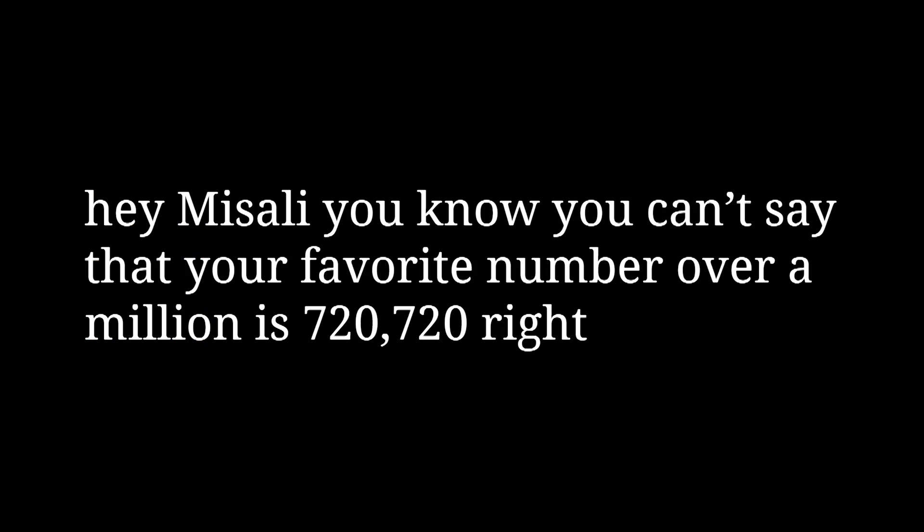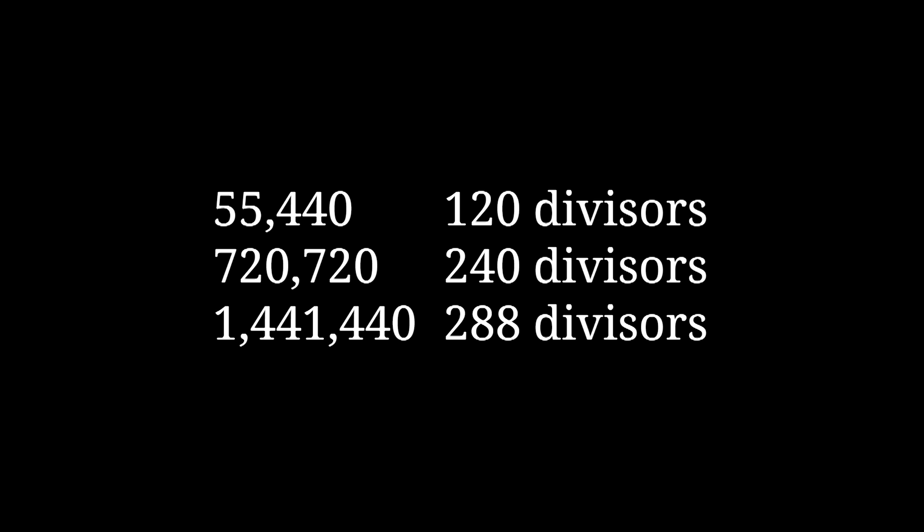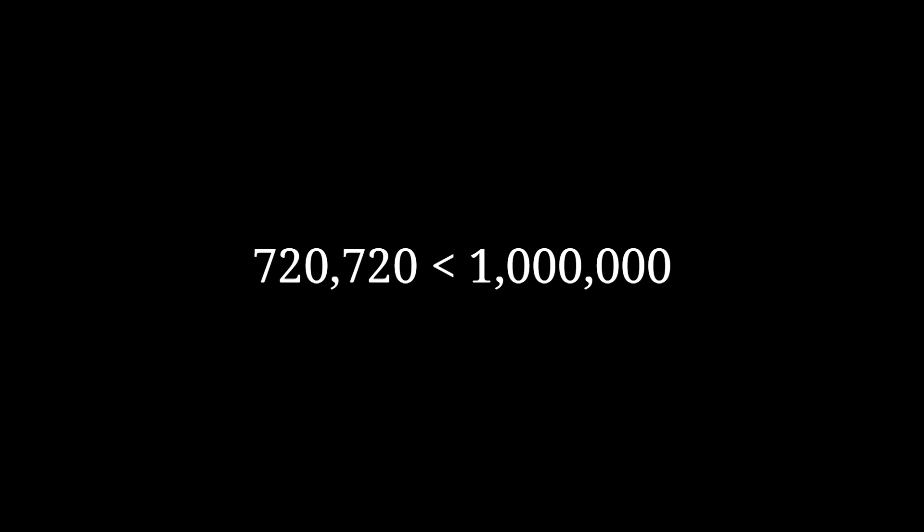Right, so here's the thing. 720,720 is a great number, but it's also not bigger than a million. While it is roughly the same size as a million, it is also very obviously less than a million, so I cannot call it my hashtag mega fave number. I mean, sure, I could just go up to the next superior highly composite number and talk about 1,441,440, but, like, it doesn't even have that many more factors as the thing. Like, okay, the SHCN before 720,720 is 55,440, which has 120 divisors, and, like, 720,720 has 240 divisors, right? So it's literally twice as many. But then 1,441,440 only has 288? Like, ooh, big deal, that's 48 more divisors from a number that's twice the size, like, come on. But, sure, 720,720 is less than a million.